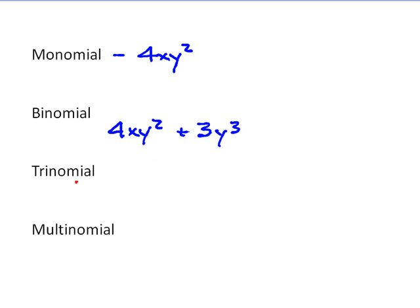A trinomial is three terms. So let's keep using what we've been used to, put that in, and 3y to the third. Now the next term can be simple or again complicated, but it's three different terms, a trinomial.